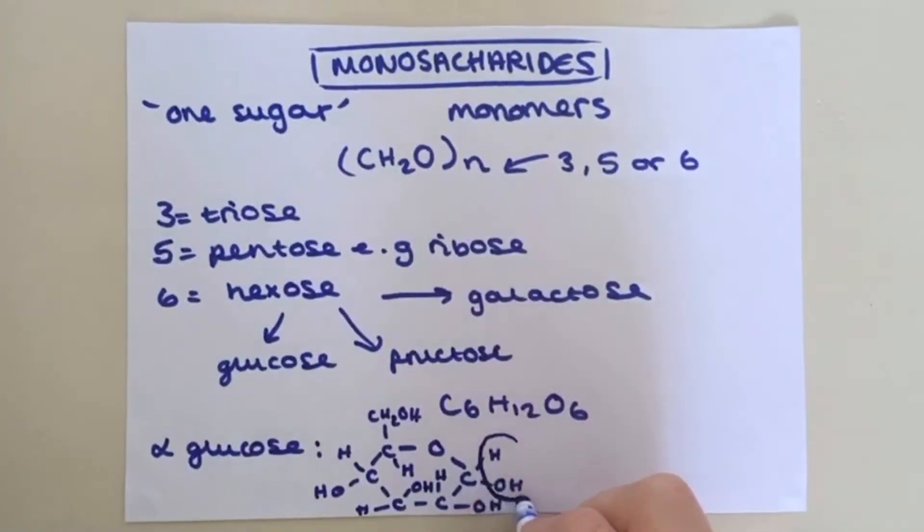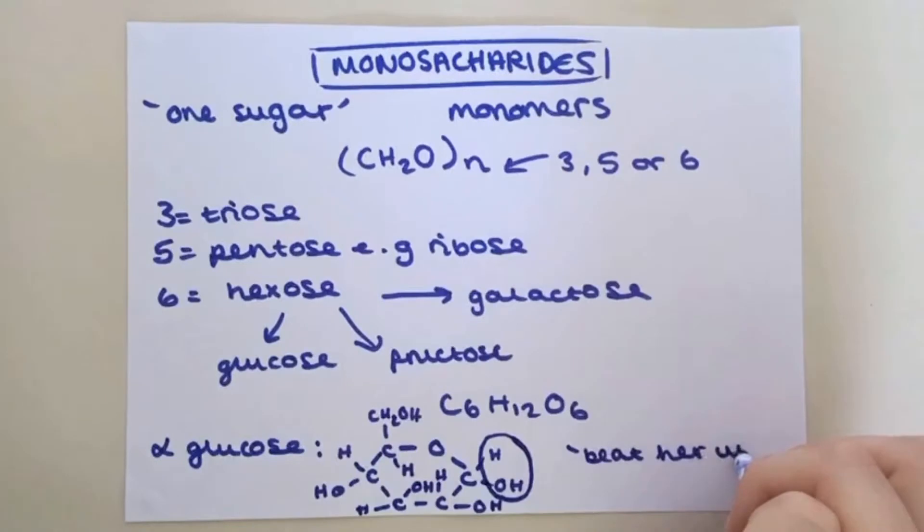Beta-glucose is basically the same apart from this H and OH at carbon number 1 which is swapped round or inverted. I like to remember this using the phrase beat her up because in beta-glucose the OH is up, it's on the top.